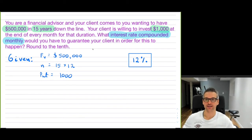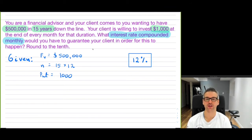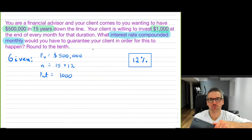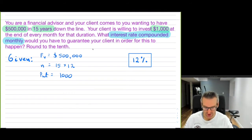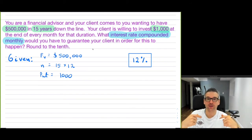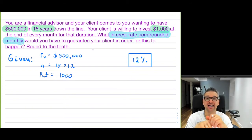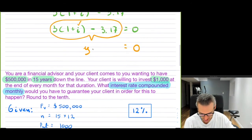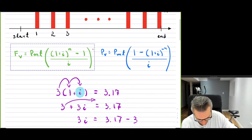Now let's go back, without a business calculator, to solve the questions I did previously. We know the answer is around 12% — it was compounded monthly. The example: you're a financial advisor, you want a future value of half a million for your client, over 15 years, making payments of a thousand dollars per month. I'll show you how we can use these tools. I encourage you to use the business calculator — what I'm showing you with guessing is exactly what the business calculator is programmed to do.